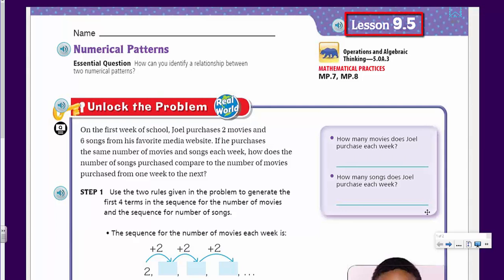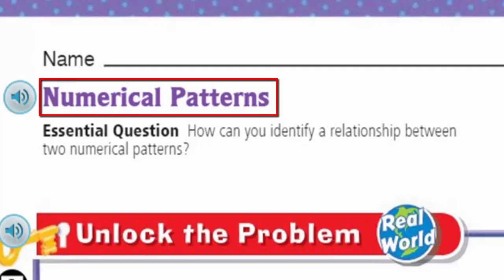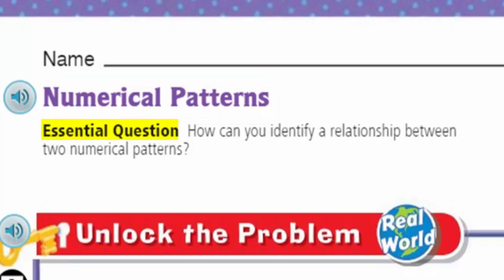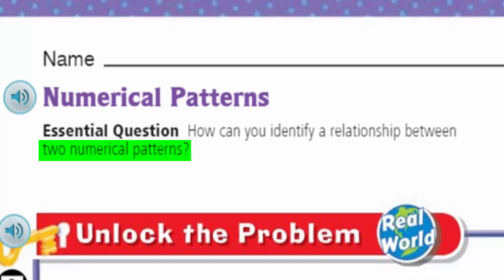We have lesson 9.5. We're cruising through Chapter 9. And our topic today — numerical patterns. Sounds like we might be doing some things with sequences here. And the essential question — our learning target today is: how can you identify a relationship between two numerical patterns?